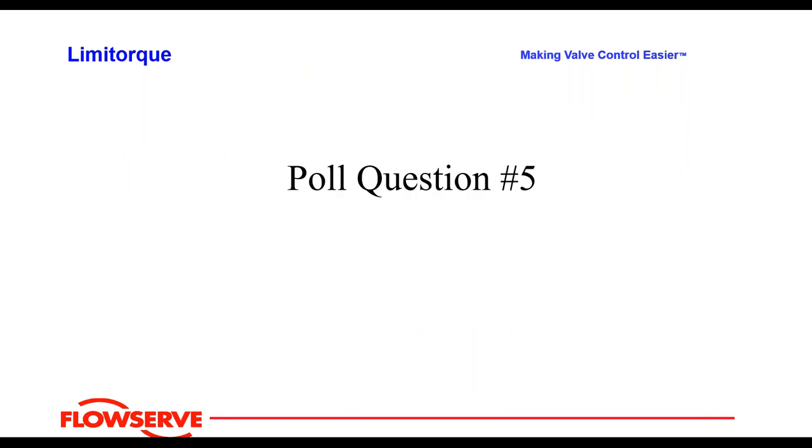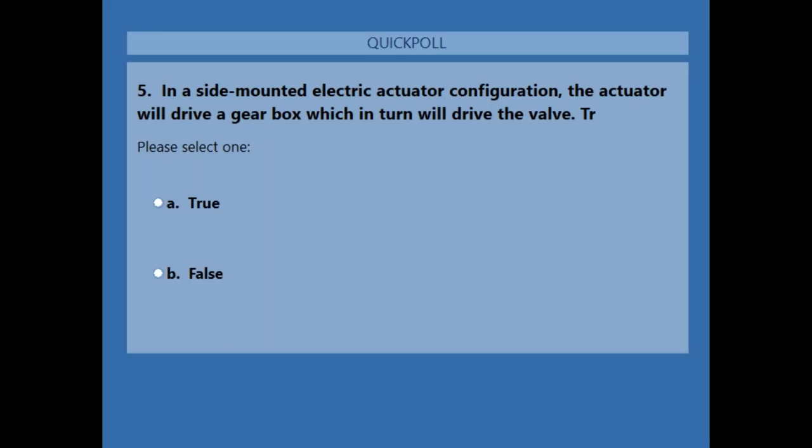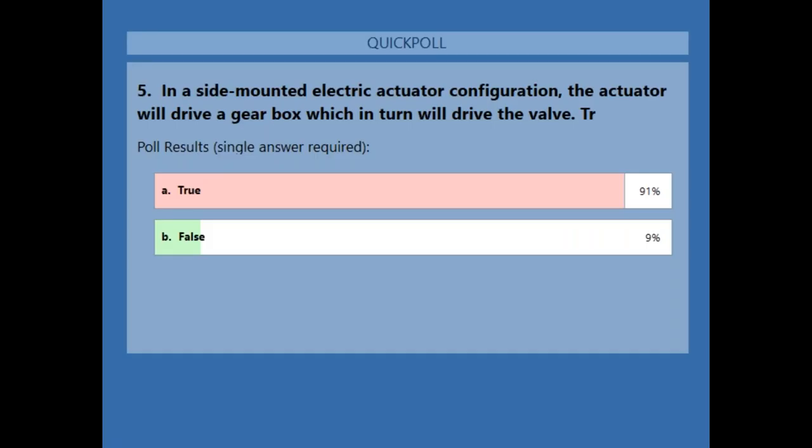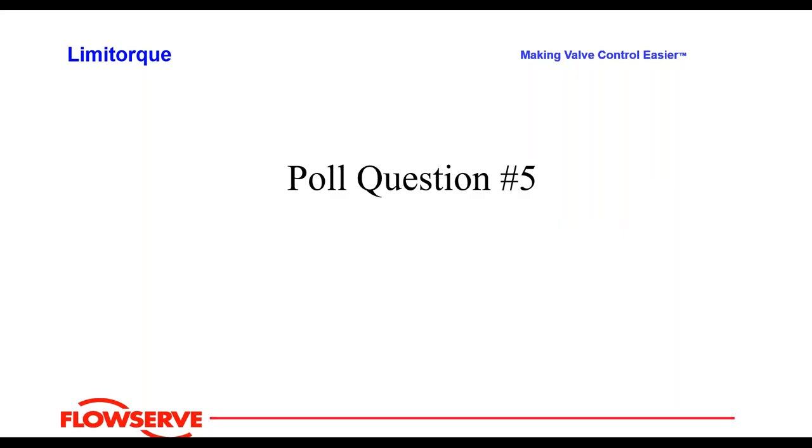Poll Question 5: In a side-mounted electric actuator configuration, the actuator will drive a gearbox which in turn will drive the valve — true or false? The answer is true; 91 percent answered correctly.